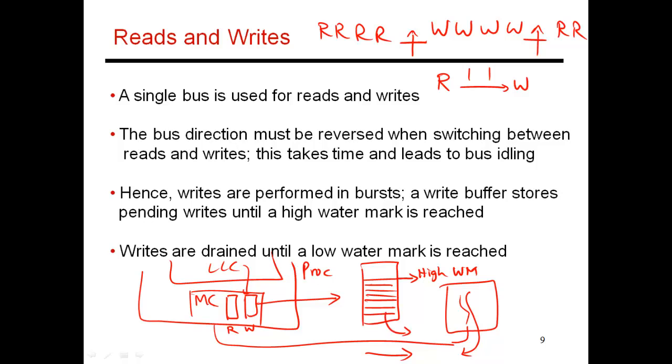Finally, when the number of writes reaches what is called a low water mark, you feel comfortable enough to switch back to doing reads because the reads have been waiting and are critical—your program is waiting for their results. At that point, you switch back to reads. Then again when the write buffer reaches the high water mark, you switch back to doing writes and so on. This is how most memory controllers handle reads and writes.